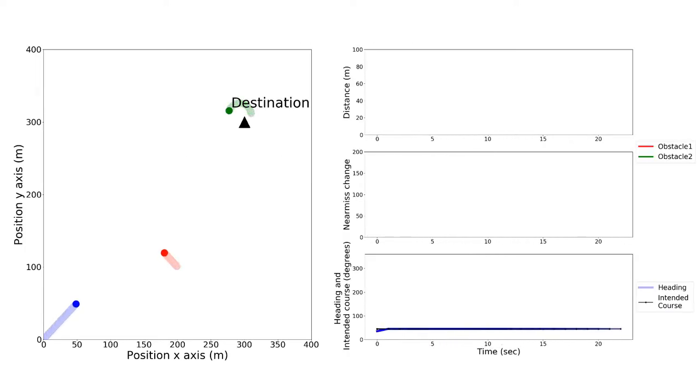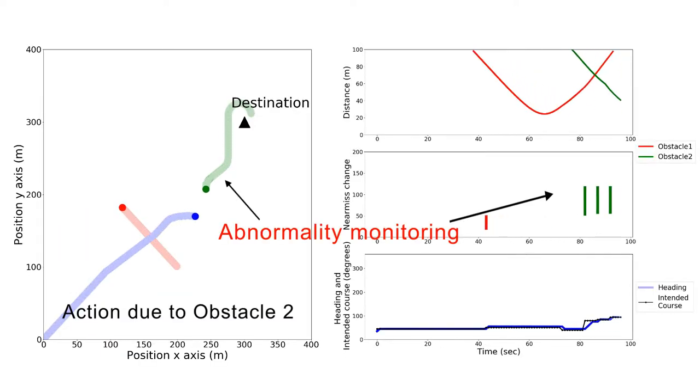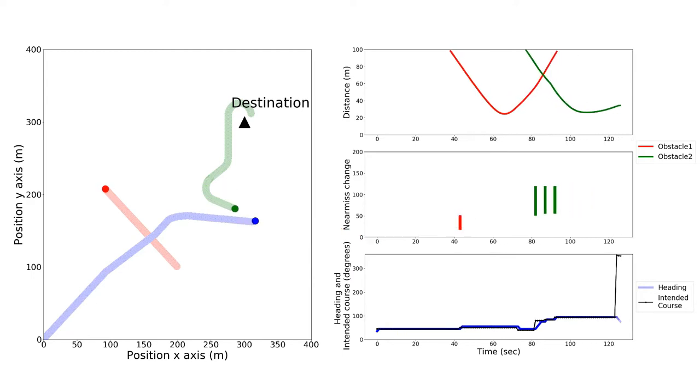This sample experiment shows our method's benefits. The robot takes an efficient action to avoid the red obstacle when detected. The algorithm is also able to avoid the green obstacle that displays an abnormal behavior.